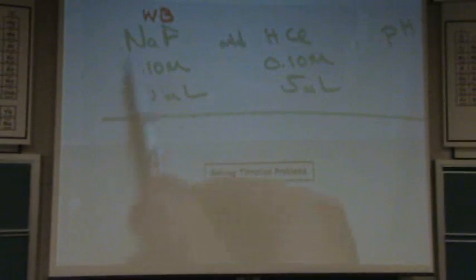So NaF, what is that? It's a weak base. Weak base. How do you know it's a weak base? Well, sodium is one of your spectator ions. So you have F minus. That comes from HF, which is a weak acid. So this is a weak base. What's HCl? Strong acid. Strong acid. So this is a weak base, strong acid titration. That's important to know.